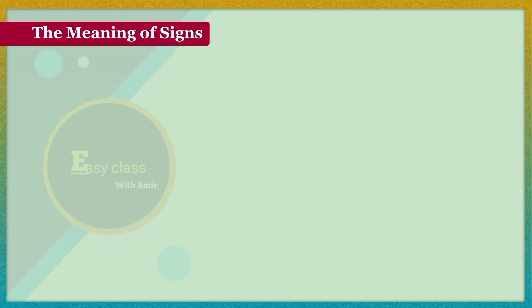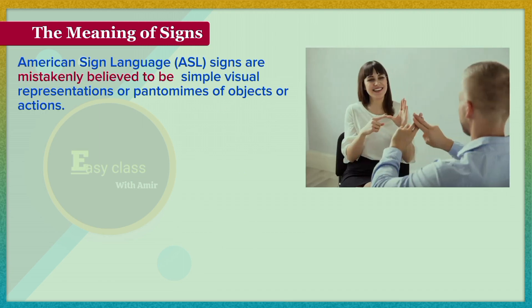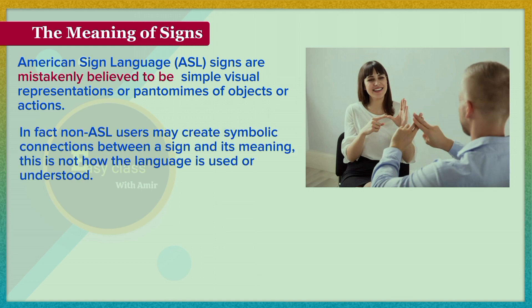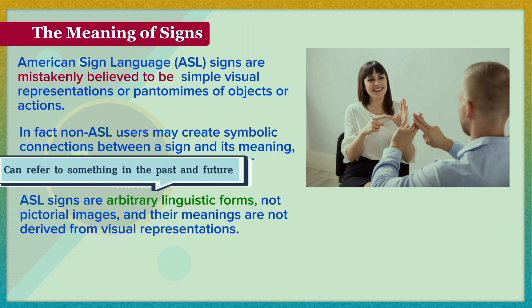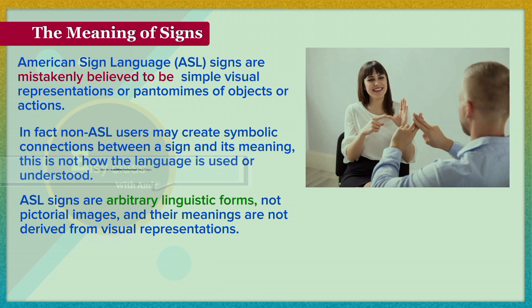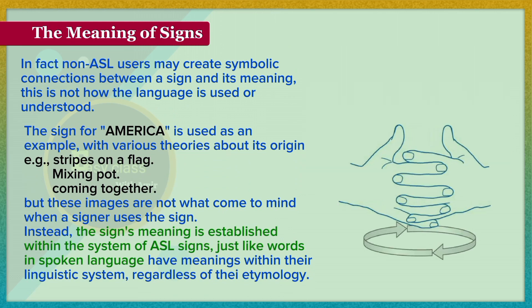ASL signs are mistakenly believed to be simple visual representations or pantomimes of objects or actions. In fact, non-ASL users may create symbolic connections between a sign and its meaning, but this is not how the language is used or understood. ASL signs are arbitrary linguistic forms, not pictorial images, and their meanings are not derived from visual representations. The sign for 'America' is used as an example, with various theories about its origin — stripes on a flag, melting pot, coming together — but these images are not what come to mind when a signer uses the sign. Instead, the sign's meaning is established within the system of ASL signs, just like words in spoken language have meanings within their linguistic system, regardless of their etymology.